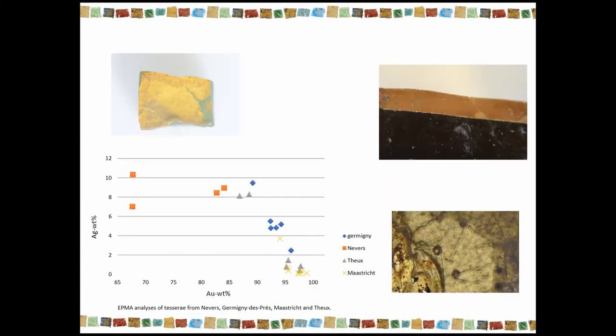Let's have a quick look at the gold. This is not really the subject of the workshop, but still it's interesting. And we are going to see when we were able to analyze the gold because it's very, very thin. We are going to see that we've got different compositions. The gold of Nevers is clearly different from the other sheets of gold, because it holds a lot of copper.